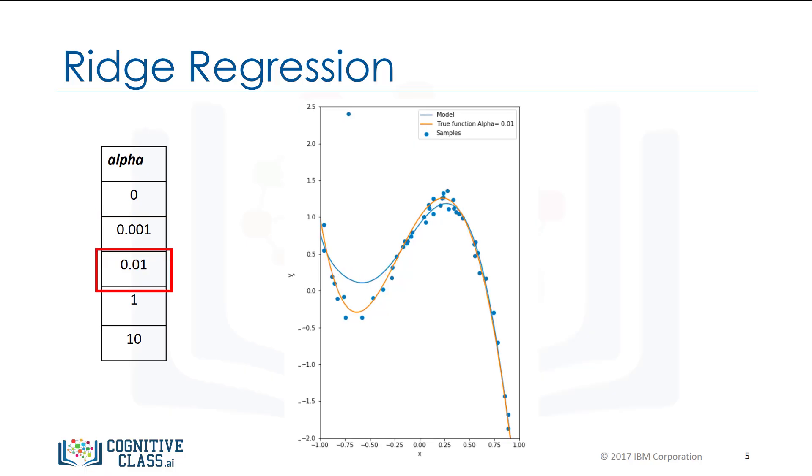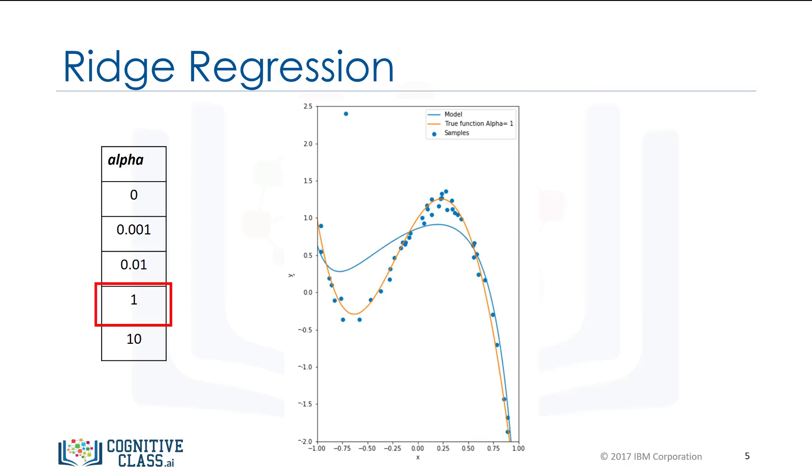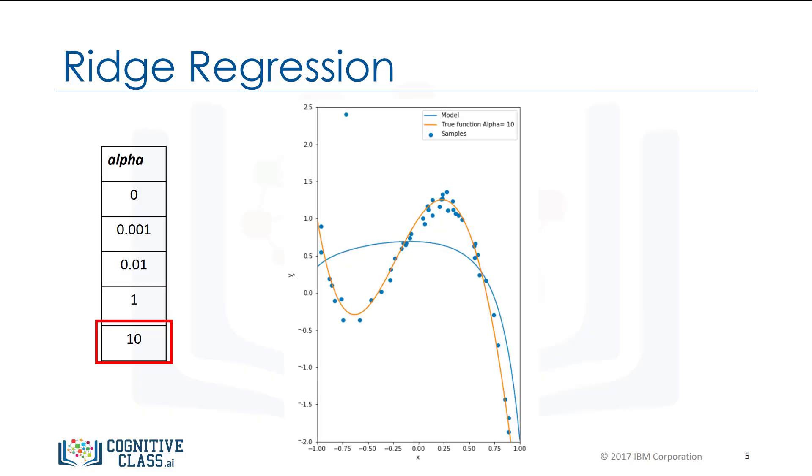For alpha equal to 0.01, the estimated function tracks the actual function. When alpha equals 1, we see the first signs of underfitting. The estimated function does not have enough flexibility. At alpha equals 10, we see extreme underfitting. It does not even track the two points.